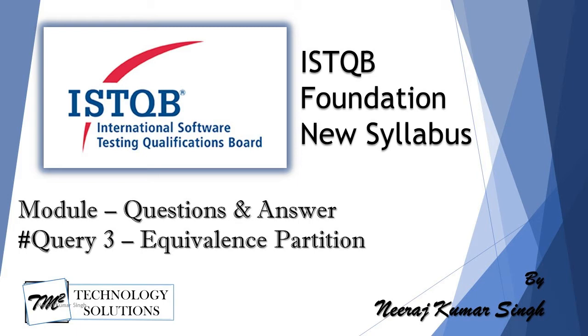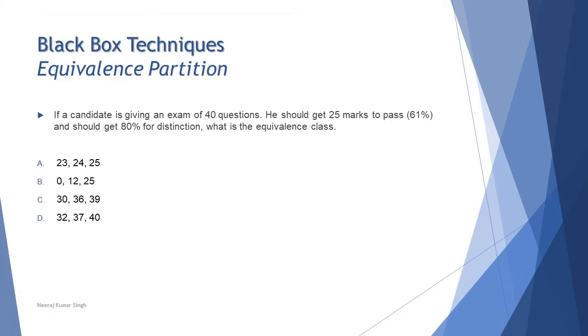So I thought of keeping it in the Q&A session. Today's question comes back again from the equivalence partition which is about ISTQB itself, but they just have flipped the marks a little bit here and there. So please do not stick to this, it is just an example, just a scenario to ask you a question. The question says if a candidate is giving an examination of 40 questions, he should get 25 marks to pass, that is 60-61 percent, and should get 80 percent for distinction.